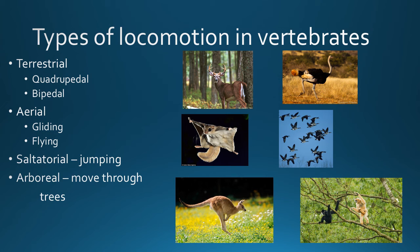Another type of adaptation is locomotion. Just a few types include terrestrial, traveling on land; aerial, in the air; saltatorial, jumping; arboreal, traveling through trees; and aquatic. You can get more and more specific about types of locomotion in vertebrates. Think about the adaptive advantage of each — why has an organism evolved to jump, fly, glide, or run on two or four feet?